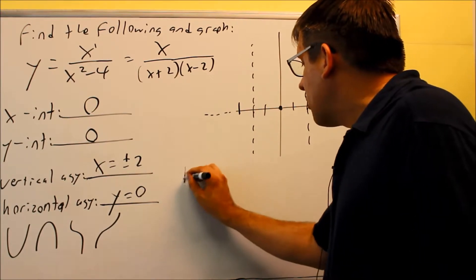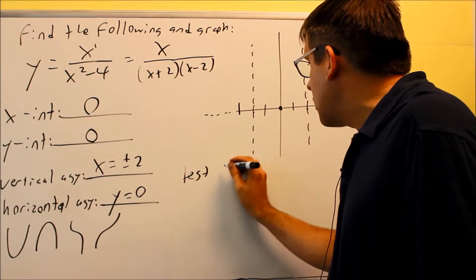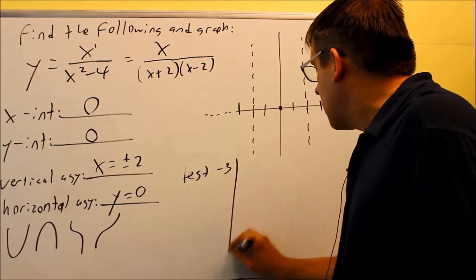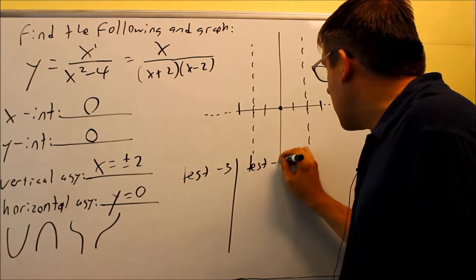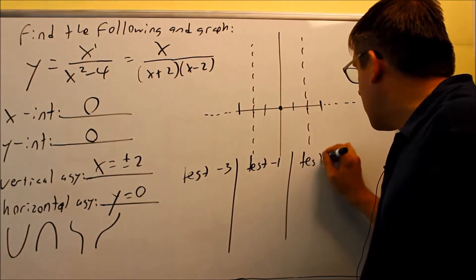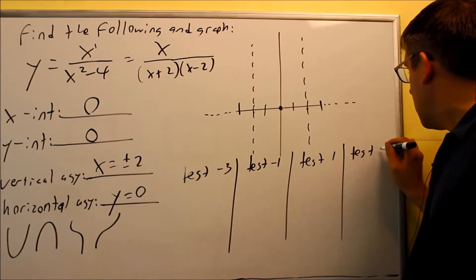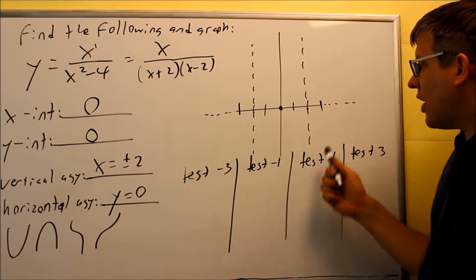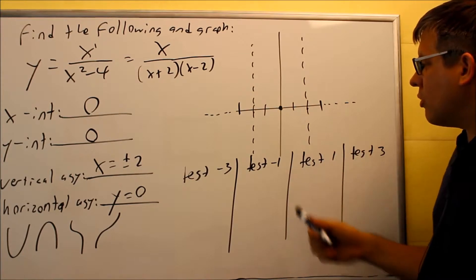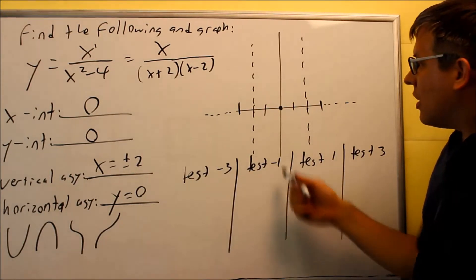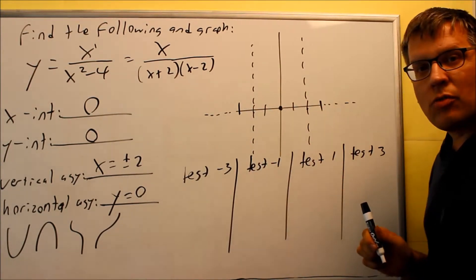Okay, so again, what I'm going to do is I'm going to test each of these. I'm testing negative 3, I'm going to test negative 1, I'm going to test 1, and then I'm going to test 3. These are all the x values that I'm testing, all in between here, and that will give me y values, and I'll be able to see exactly where the graph is going to be drawn.